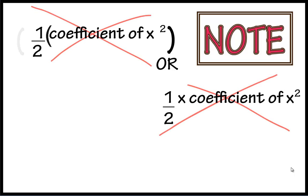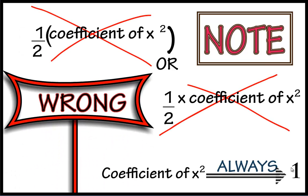Please note: half into coefficient of x square, or half coefficient of x square, is wrong. Also remember that the coefficient of x square should always be 1. If it is not so, we need to make it 1 by dividing the whole equation by the coefficient of x square. Thus we made the LHS a perfect square and found the values of x. Hence this method is known as the completing the square method.